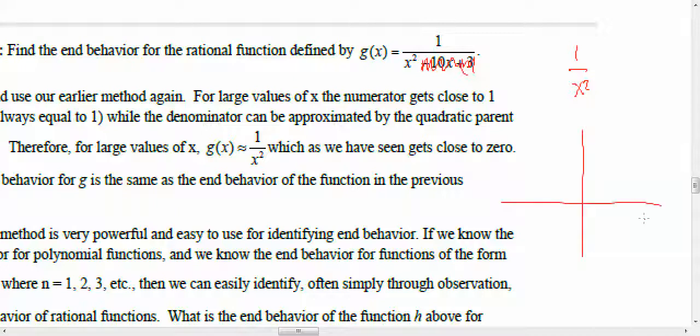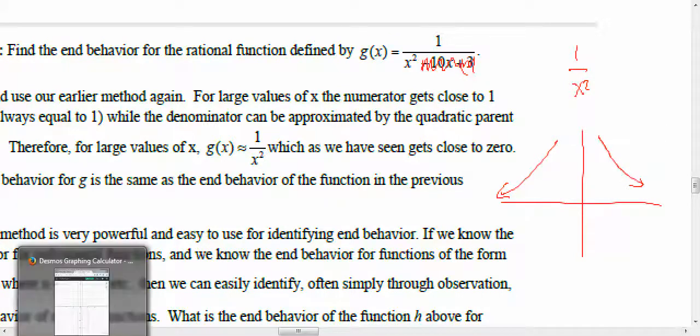The one over x squared is going to be the end behavior. Now, one over x squared, I know that graph looks like this. So without even really knowing what this function exactly looks like, I can tell you that that's basically what the graph is going to look like. Let's try graphing that.